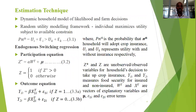On the estimation technique, a random utility maximization framework was the basis, whereby the individual maximizes utility subject to available constraints, whereby a household will only insure their crops if the utility derived from insurance is higher than the utility without insurance.